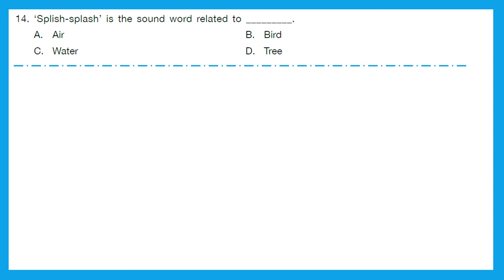Question 14: 'Splish, splash' — is the sound word related to air, bird, water or tree? Splashing of water. The right answer is option C — water.